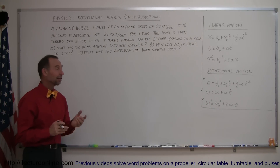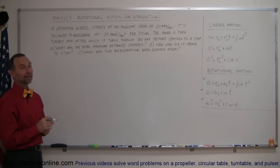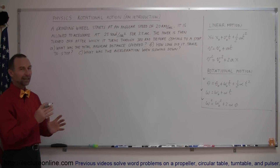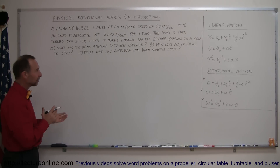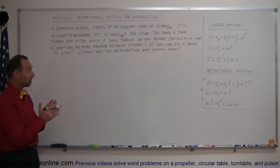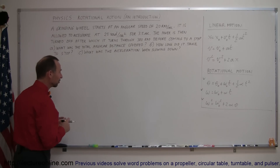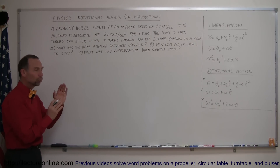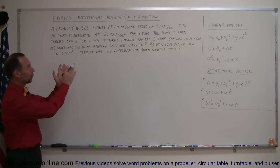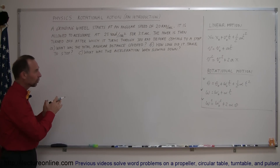That's quite a problem, and after you read it you probably don't know where to begin. The best thing to do is to write down everything that's given, everything that's being asked for, make a drawing or sketch if that helps, and organize the problem a little bit. It sounds like there are two parts: the first part is when the wheel is speeding up, and the second part is when the wheel is slowing down.